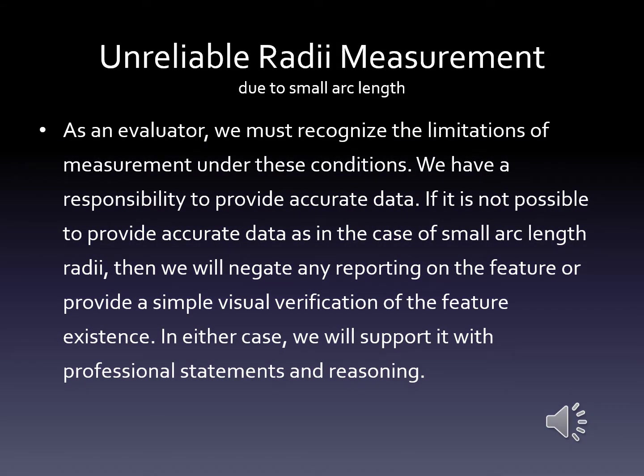As an evaluator, we must recognize the limitations of measurement under these conditions. We have a responsibility to provide accurate data. If it is not possible to provide accurate data in the case of small arc length radii, poor form, or a combination of those, then we will negate any reporting on the feature or provide a simple visual verification of the feature existence. In either case, we're going to support that with professional statements and reasoning.